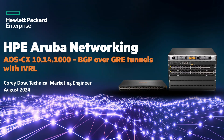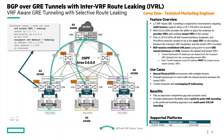The feature is called BGP over GRE tunnels with IVRL — inter-VRF route leaking. Known also in the industry, if you are looking at other vendor solutions, it's typically called VRF-aware GRE tunneling. In this case, we provide the support with selective route leaking, and you'll see what that means in a few minutes.